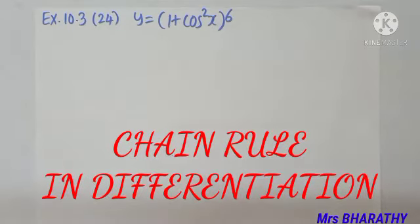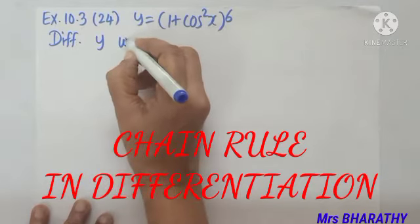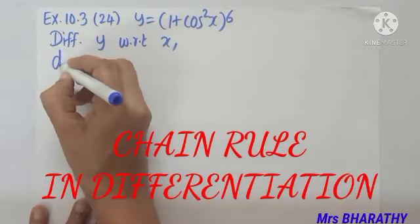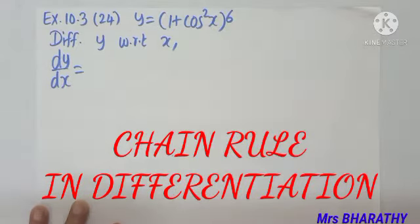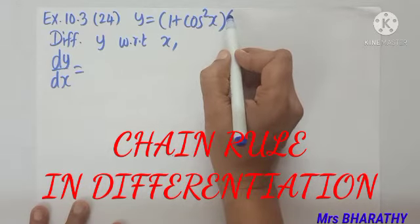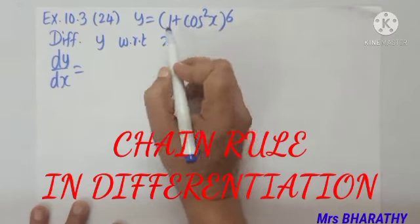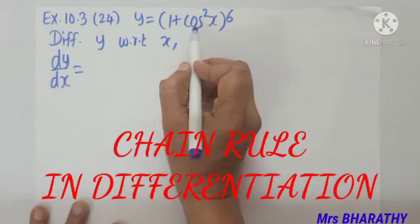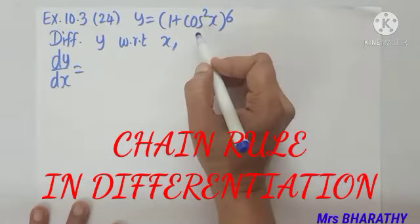Good morning, children. We proceed with chain rule in differentiation, Exercise 10.3, Question number 24: y equals (1 + cos²x)⁶. As we differentiate y with respect to x, dy/dx has three steps: the power 6, what is inside the bracket (1 and cos²x), and cos²x is again power 2 with cos. So we have three steps: the power 6, the power 2, and then cos.